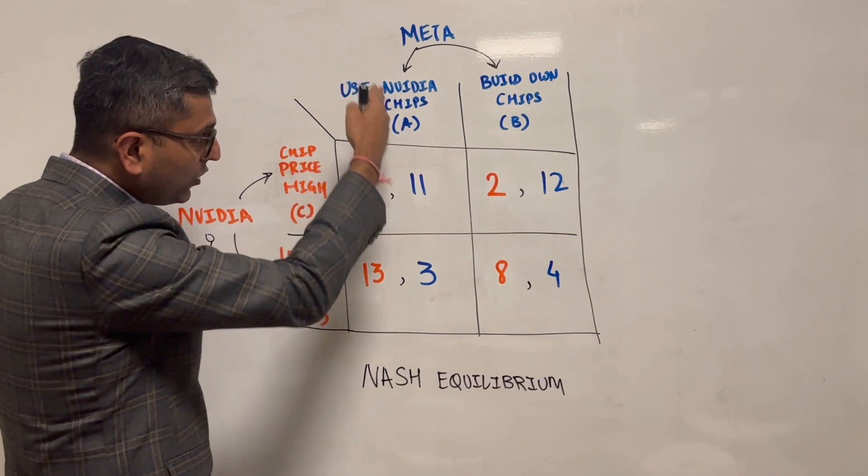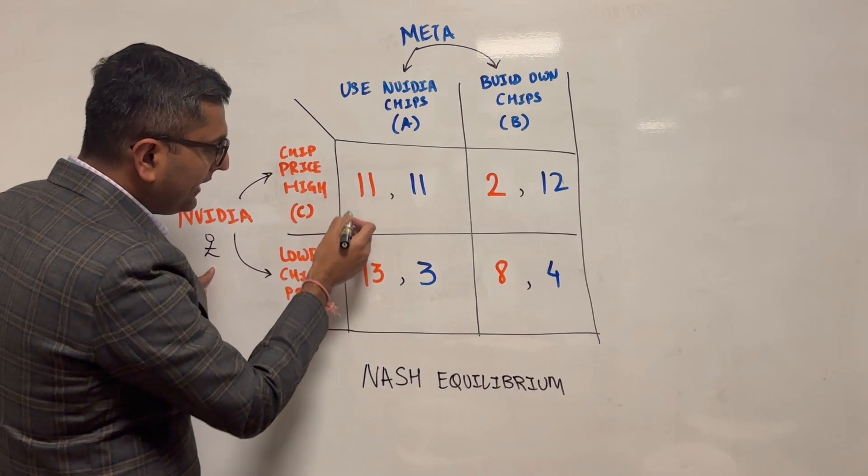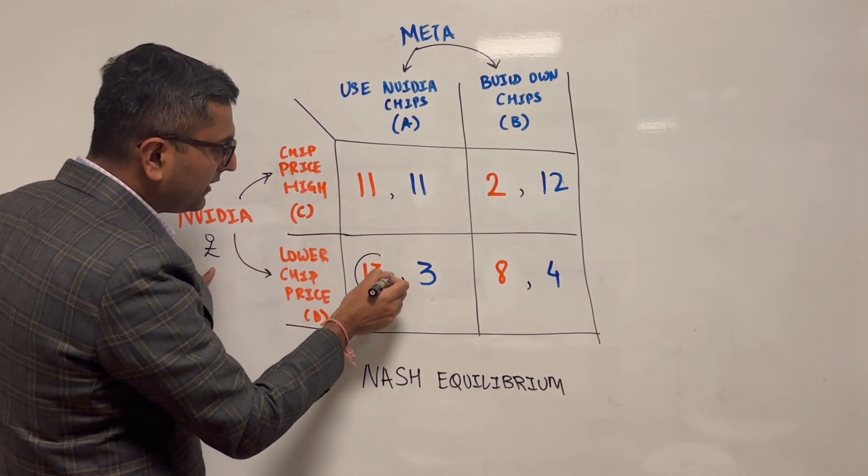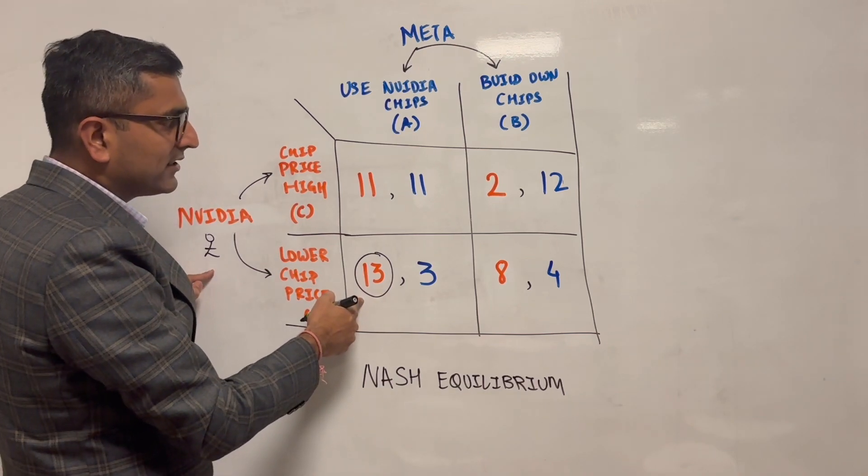Okay, Meta is going to go with choice A, so I'm going to assume this to be true. Then they're going to say, oh, I will get a much better payoff, 13, than 11. So they would say, choice D is better in this situation.